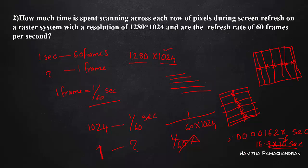So each scan line takes 16.3 × 10⁻⁶ seconds to be drawn. That covers all three questions and their solutions.